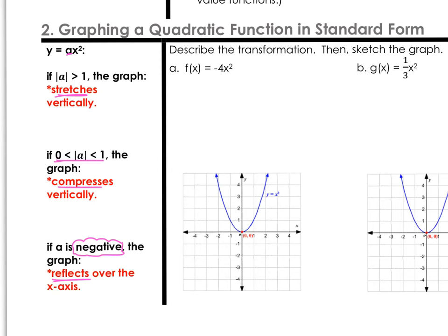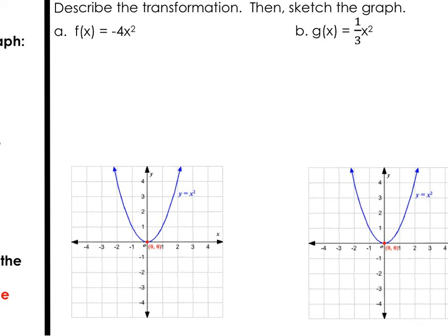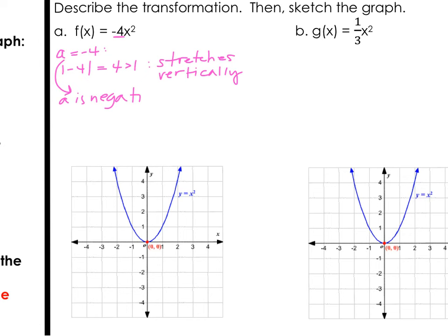You'll notice for each example on the right, I already have the parent function drawn in so we can see the transformation. We're asked to describe the transformation, then sketch the graph. If we have f of x equals negative 4x squared, that means a equals negative 4. The absolute value of negative 4 is just 4, and that's greater than 1. Because of that, we would say that this graph will stretch vertically. And because a is negative, we're also going to describe it as reflecting over the x-axis.